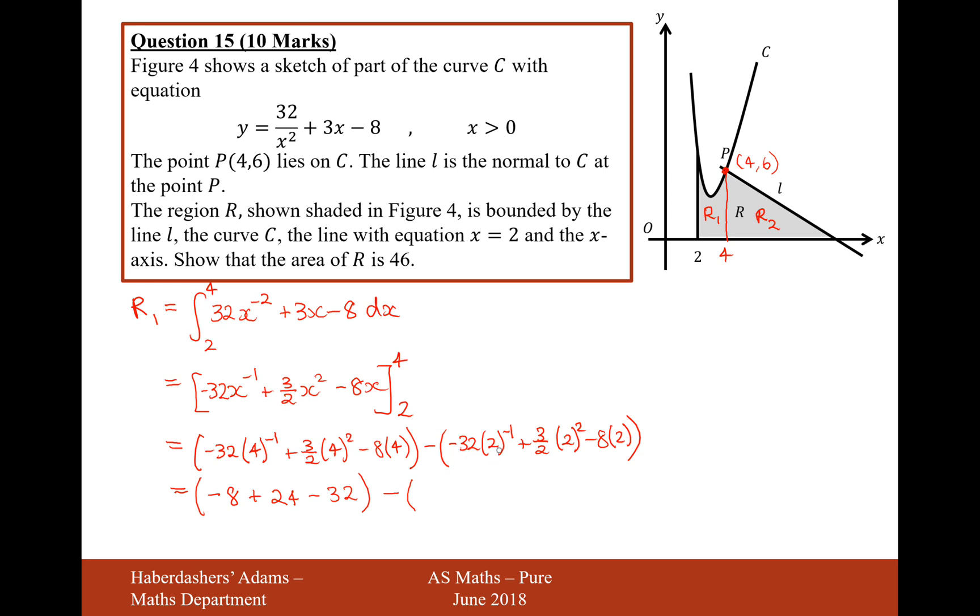Minus 32, 2 to the minus 1, that would be a half, so that would be minus 16, plus 3 over 2 is 2 times 6 minus 16. So let's now add all of this together. That would be minus 16. And then in this bracket it's going to be minus 32, minus 26. So the answer in total is 10. The area of R1 equals 10.